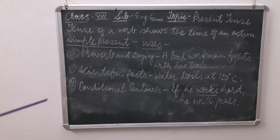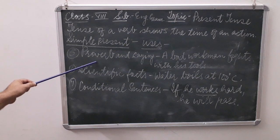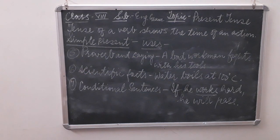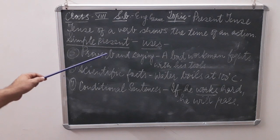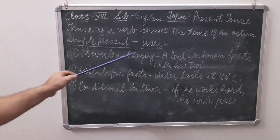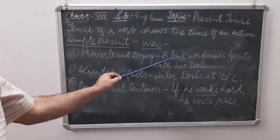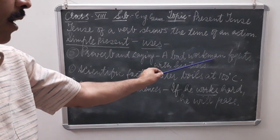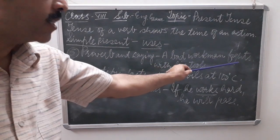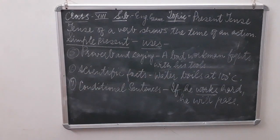Use number five: simple present tense is also used in expressing proverbs and sayings. For example, 'A bad workman always blames his tools' — that is a proverb in simple present.